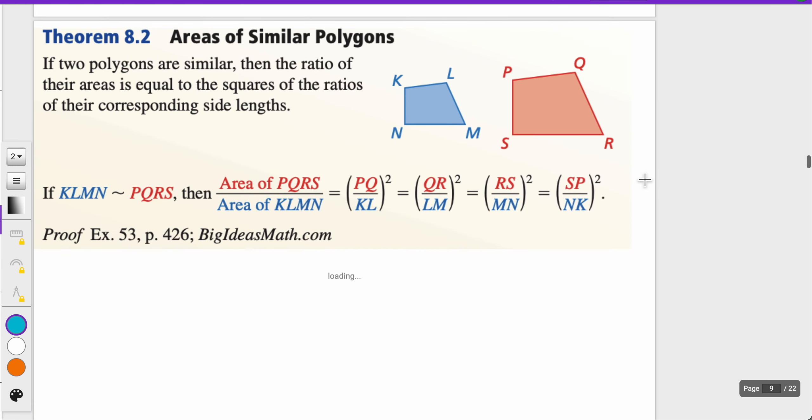When we talk about areas, if two polygons are similar, then the ratio of their areas is equal to the squares of the ratio of their corresponding side lengths. So if my ratio is 2 to 3 for my regular side lengths, the area would be the square of that, 2 times 2 and 3 times 3, which would be 4 over 9.